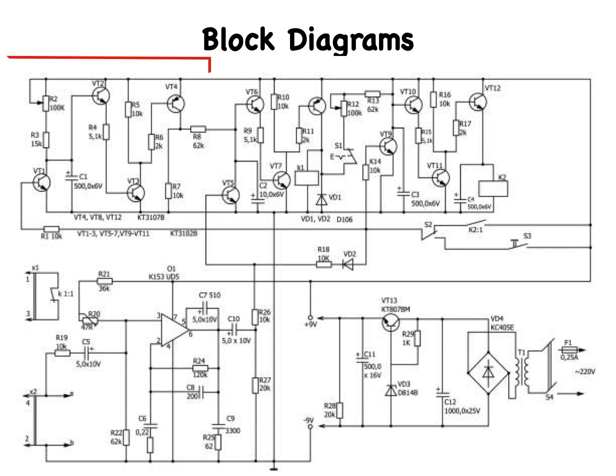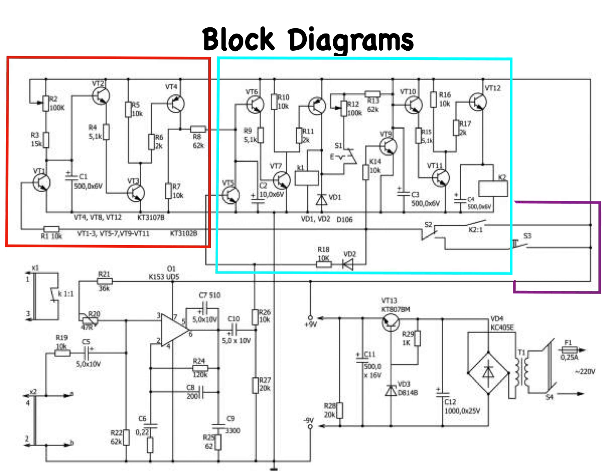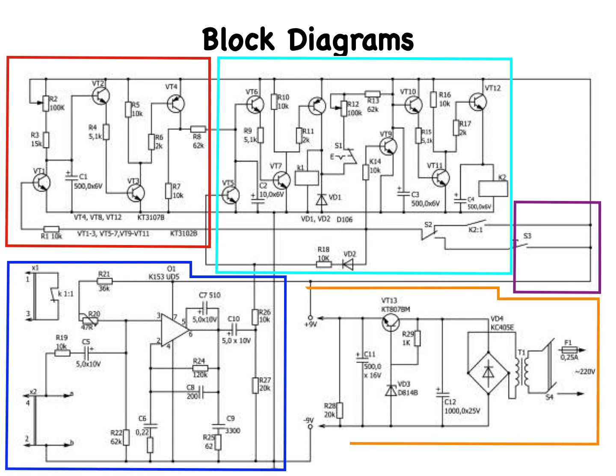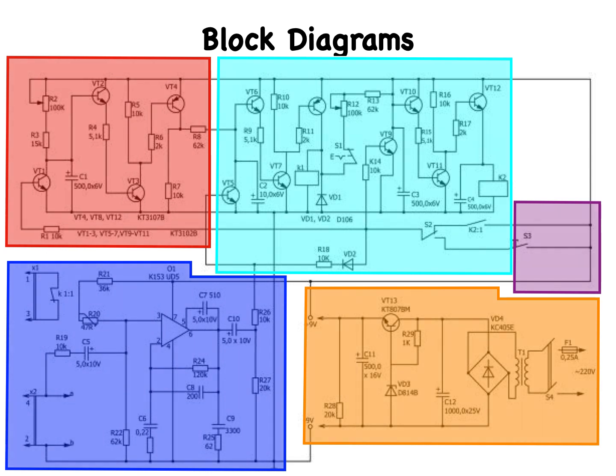In the absence of a pre-existing block diagram, a technician would have to start with the schematic, laboriously identify each stage in the system, and then draw the entire system diagram in block form. When finished, the block diagram would reveal how each stage interacts with the others.